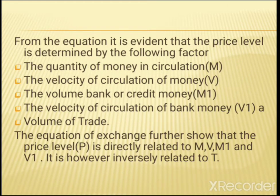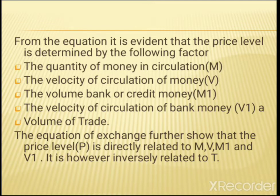From the equation, it is evident that the price level is determined by the following factors: the quantity of money in circulation M, the velocity of circulation of money V, the volume of bank credit money M1, and the velocity of circulation of bank money V1, and the value of trade T. The equation of exchange further shows that the price level P is directly related to V, M, M1, and V1, but inversely related to T.